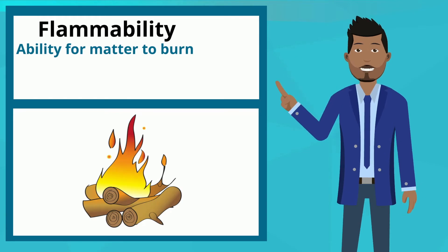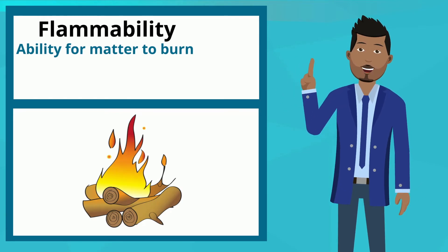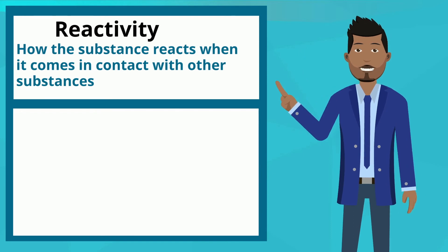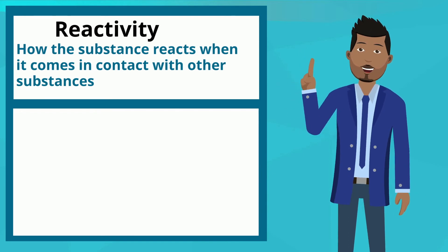Flammability is the ability for matter to burn. Reactivity is how the substance reacts when it comes in contact with another substance.